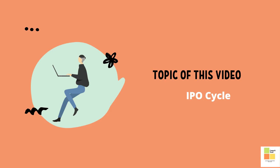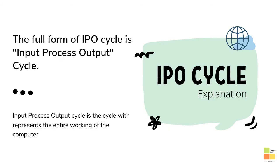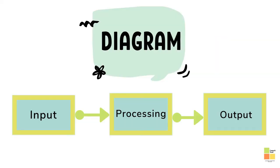The topic of this video is the IPO cycle. The full form of IPO cycle is input-process-output cycle. The input-process-output cycle is a cycle which represents the entire working of the computer. The diagram shows: input, processing, and output.